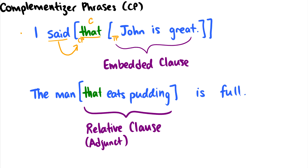The second example I want to show you is a relative clause. So the man that eats pudding is full. Once again, that eats pudding is a complementizer phrase that is modifying the head noun man. And within it, we see eats pudding as another tense phrase. There's no subject in this. There is some movement going on, which we'll cover later in the lecture series.